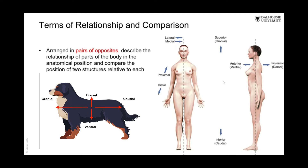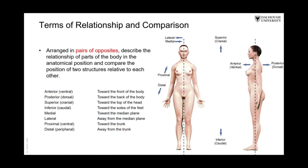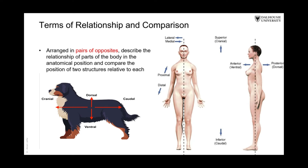Ventral and dorsal are derived from descriptions of quadrupeds and are still used especially in neuroanatomy. We also use the words superior and inferior. Inferior is replaced by caudal and superior is replaced by cranial — caudal referring to the tail, as cauda means tail.